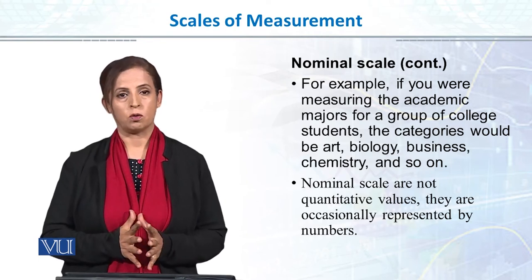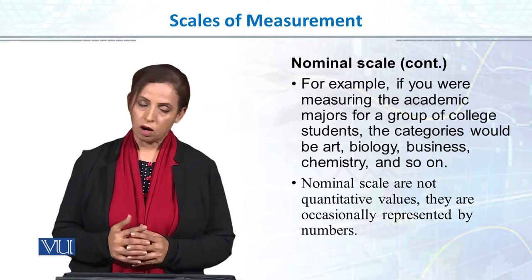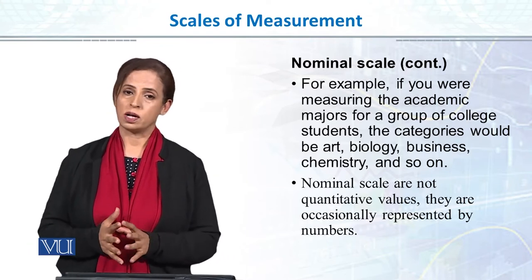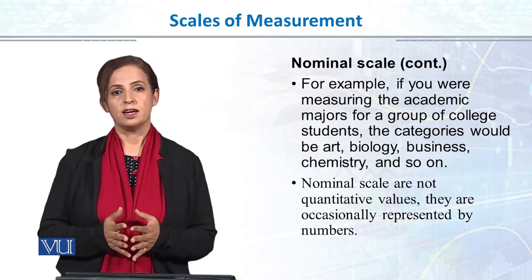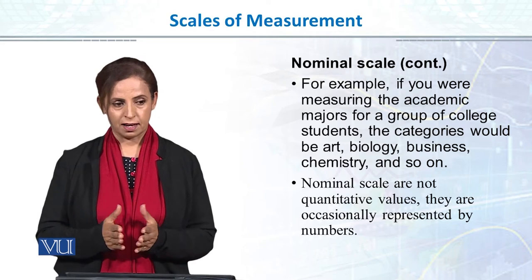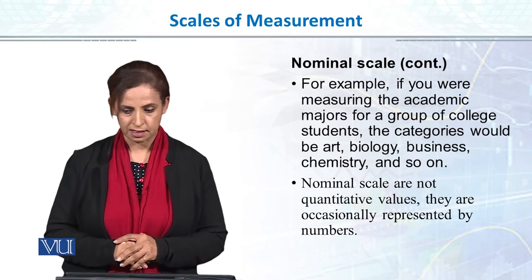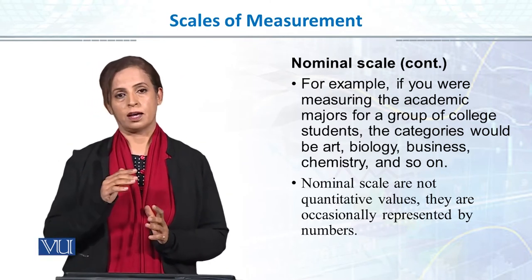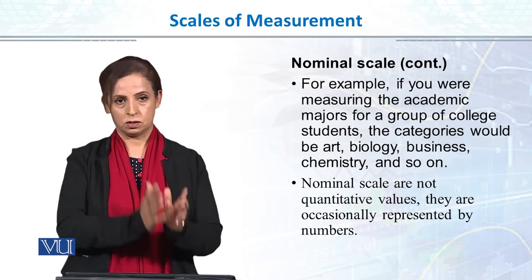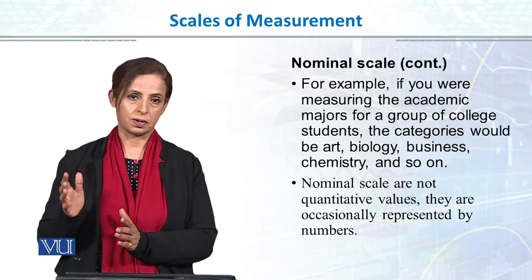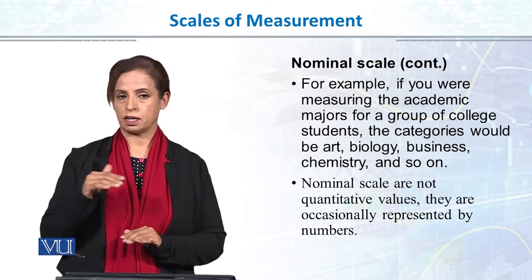Our second scale is the ordinal scale, or ordinal level of measurement. In ordinal scale, it is not exactly a true quantitative scale — there is no true quantitative value of numbers. But there is an order involved in it. For example, with socioeconomic status, when you say 1, 2, 3, you mean lower class 1, middle class 2, upper class 3. So 1, 2, 3 — there is a certain order.